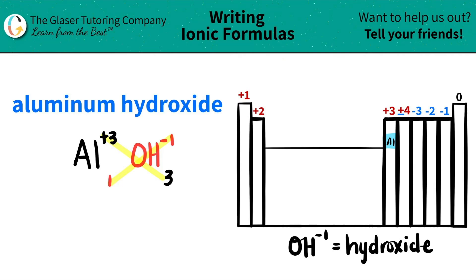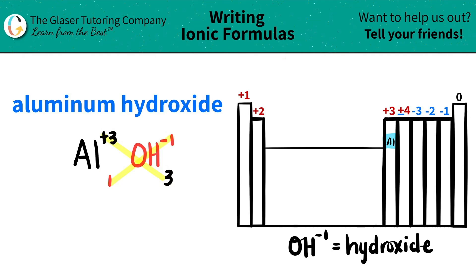And this one will crisscross down telling me that I need one aluminum. When you do this crisscrossing, don't worry about the charges anymore. You're just focusing on your subscripts. Now we're ready to write the formula. I have aluminum, which is Al. I only have one of them, so I don't have to write this one.